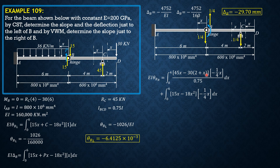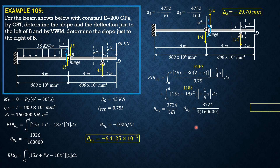Integrating and using a calculator, after simplification the first integral is 160 over 3 and the second is 1108. Combining, theta_B right equals 3724 over 3 EI. Since EI is 160,000, that is 3724 over (3 times 160,000), which in radians equals 7.758 times 10 to the negative 3 radians. So that's it for this problem.